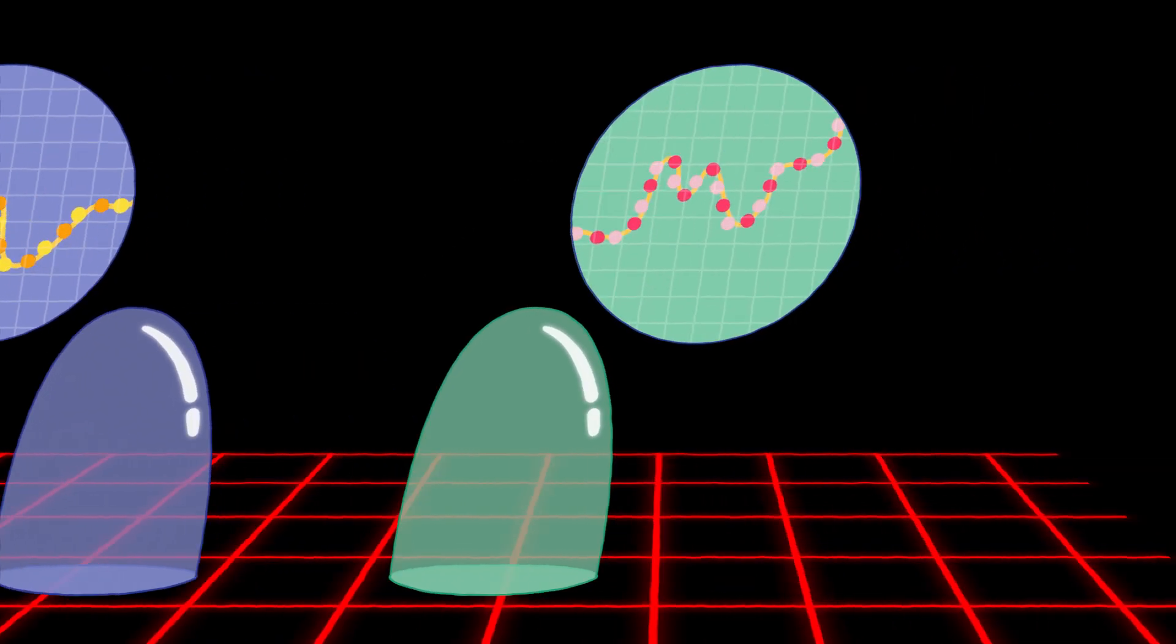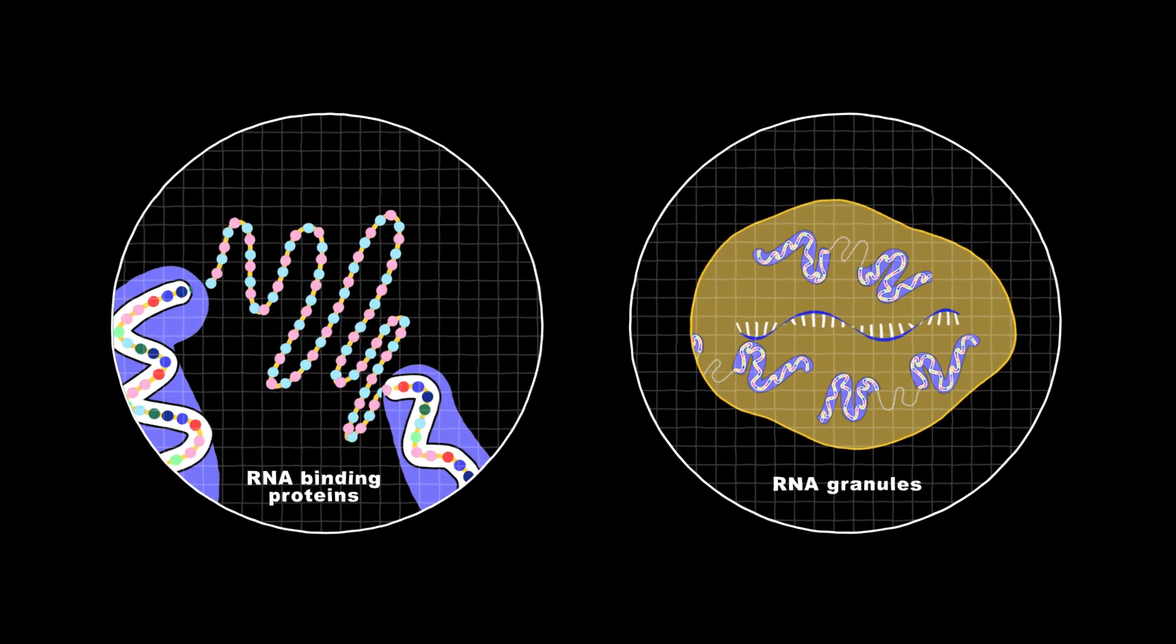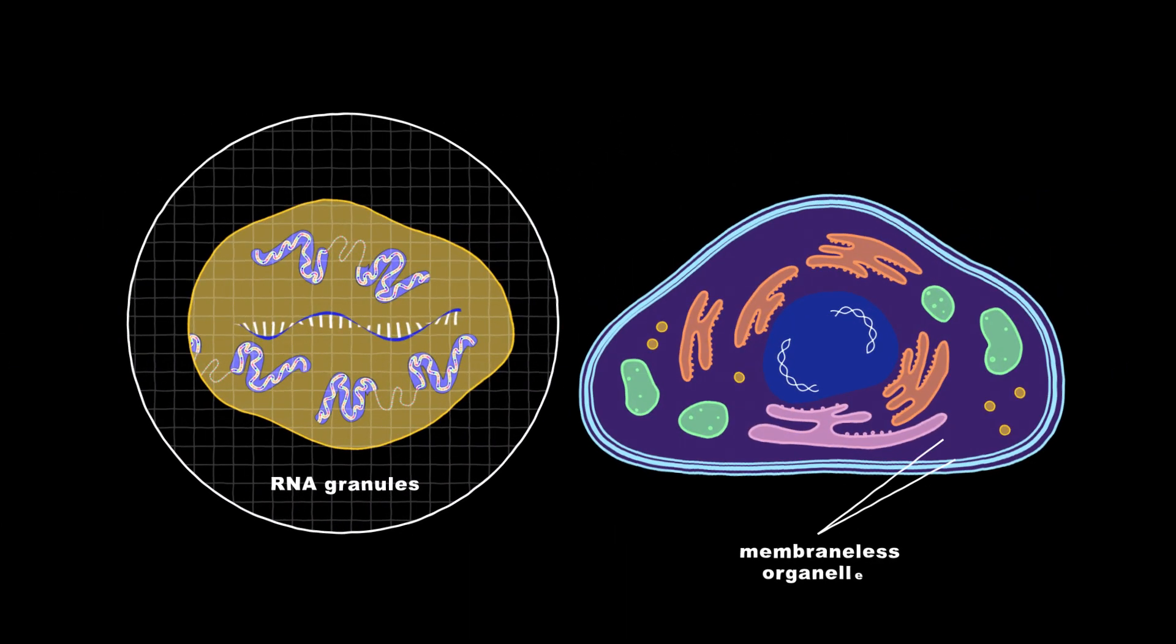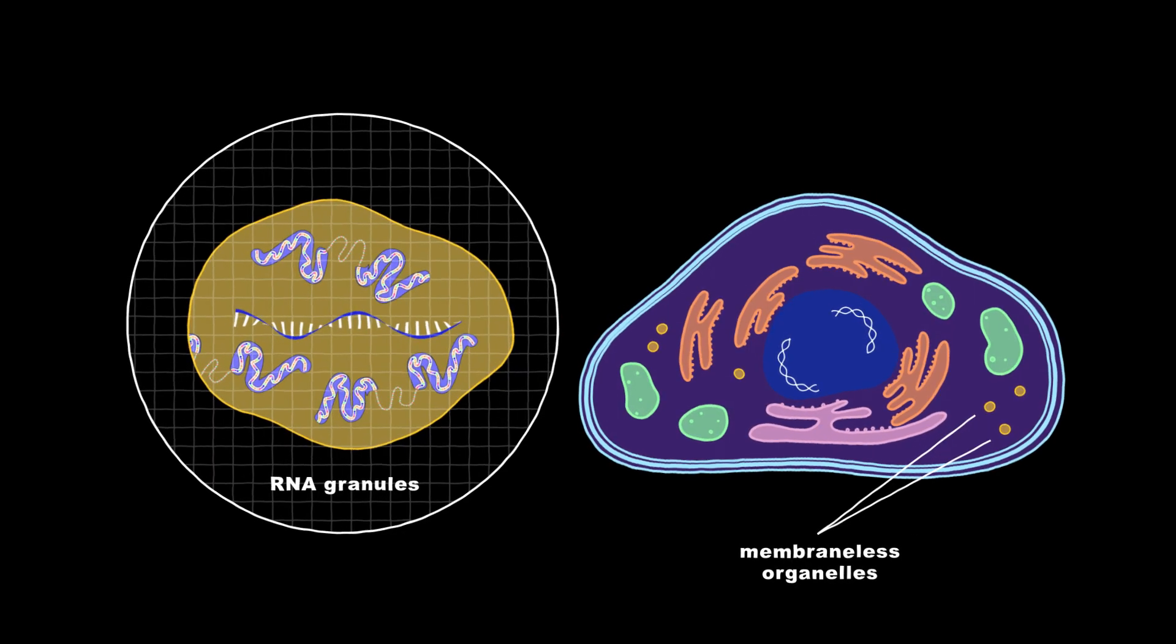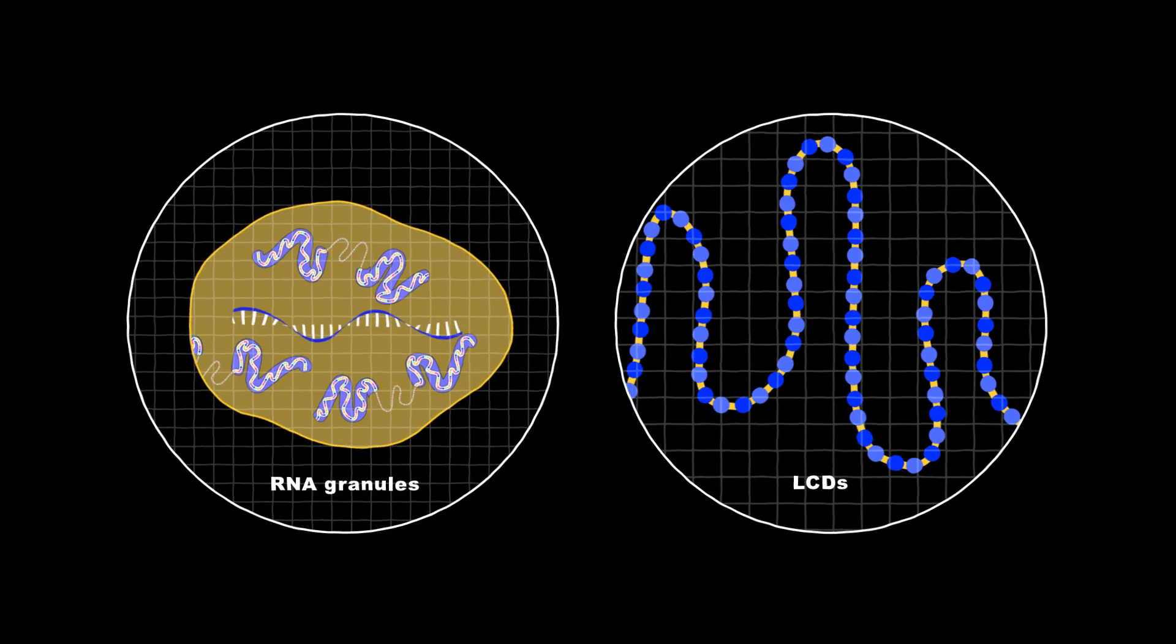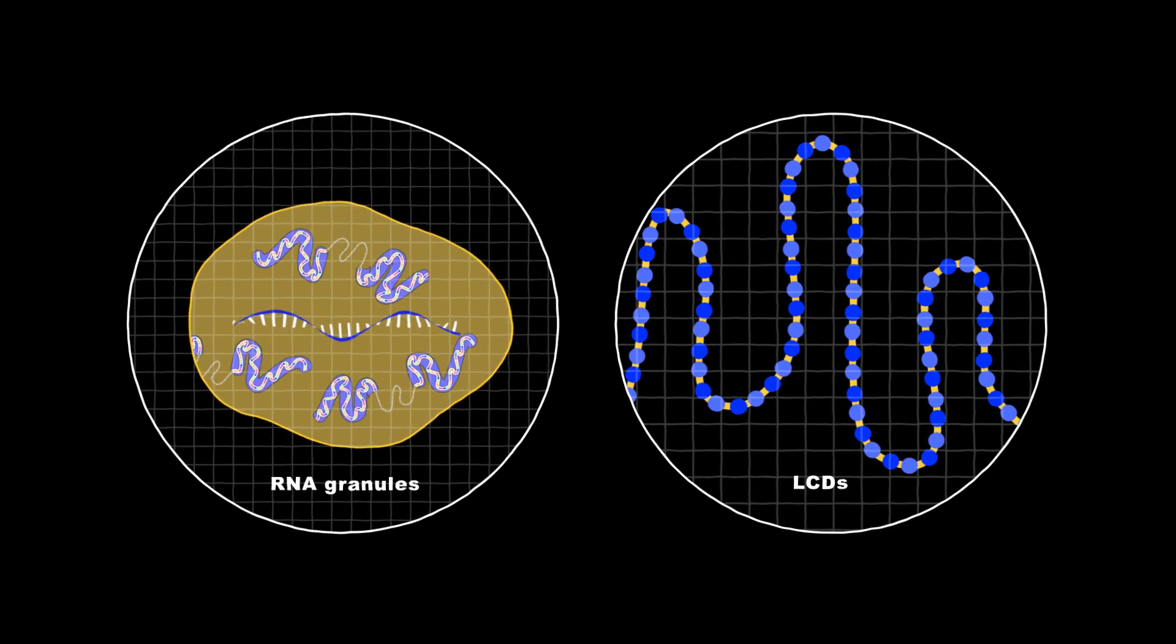Many of the RNA-binding proteins were known to be present in RNA granules. These granules form membraneless organelles in the cell that perform an array of vital functions. McKnight realized that the LCDs are likely the fundamental basis for organization of RNA granules.